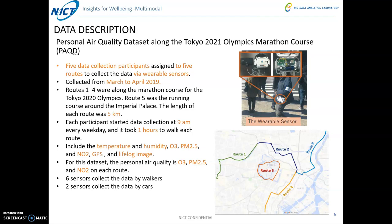The data collected includes temperature, humidity, oxidant, PM2.5, NO2, GPS, and lifelogging images. For this dataset, the personal air quality targets are the oxidant, PM2.5, and NO2. To collect all of those data, we used six sensors carried by walkers and two sensors mounted on a car.